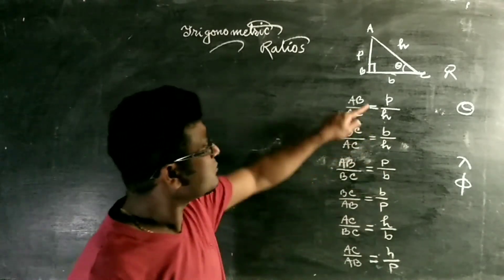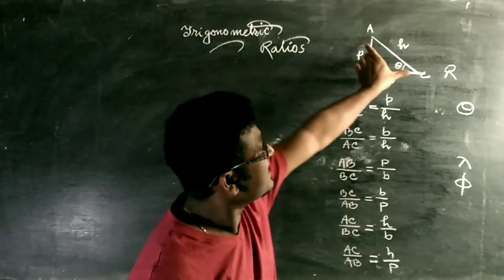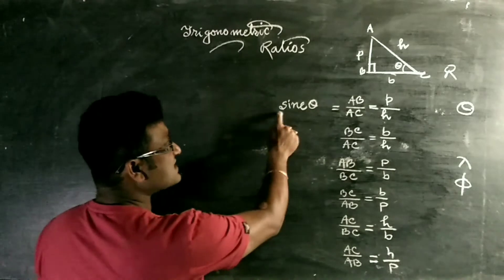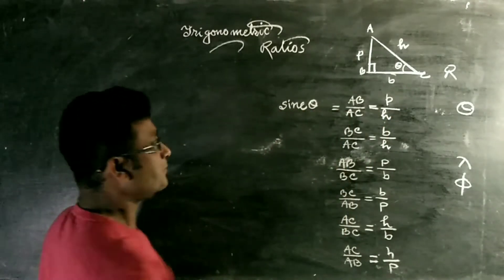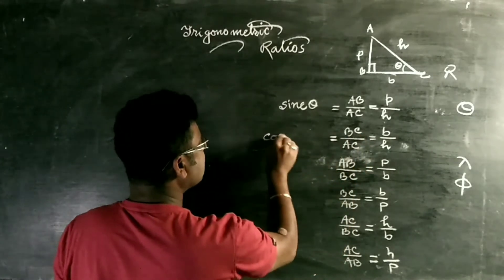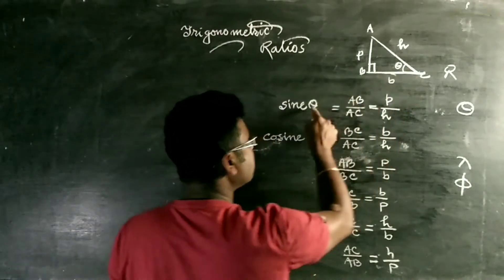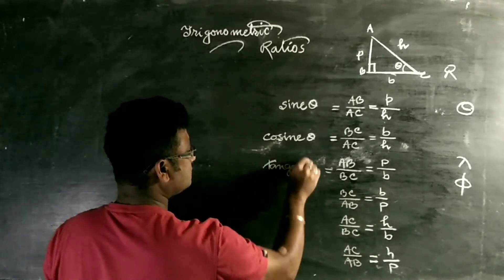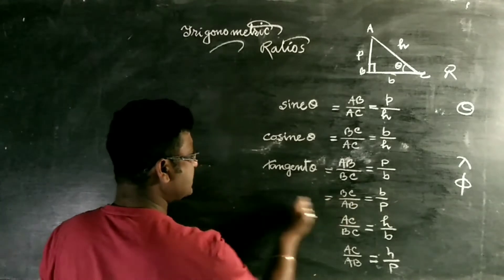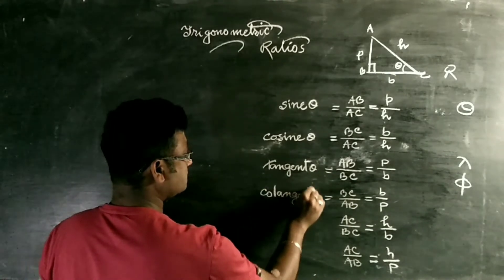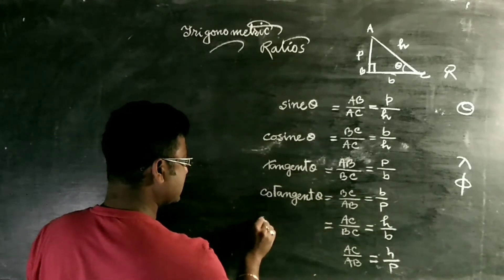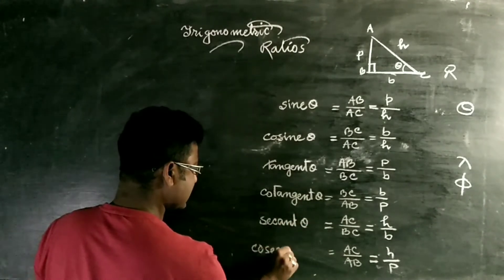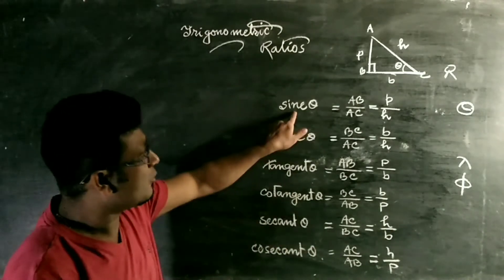In trigonometry we use these ratios with specific names. P by H is called sine theta. B by H is called cosine theta. P by B is called tangent theta. B by P is called cotangent theta. H by B is called secant theta. And H by P is called cosecant theta. So there are six trigonometric ratios.